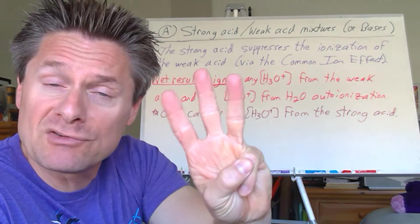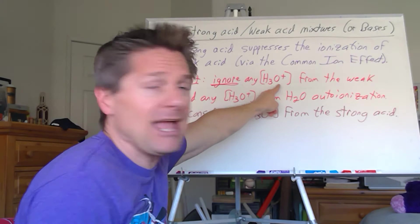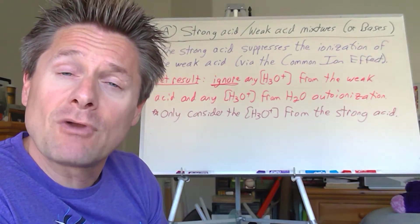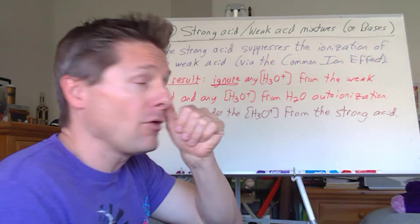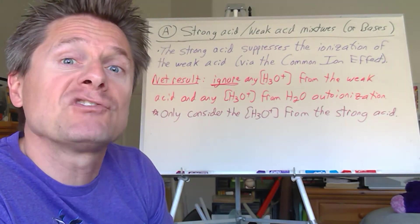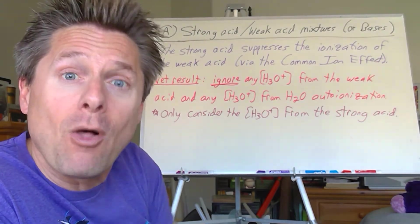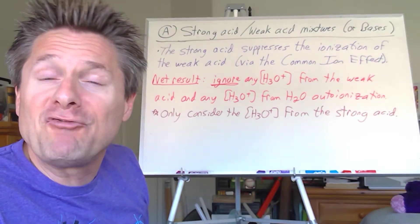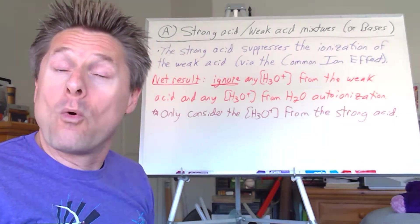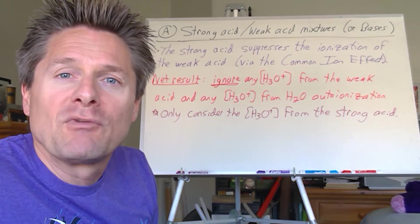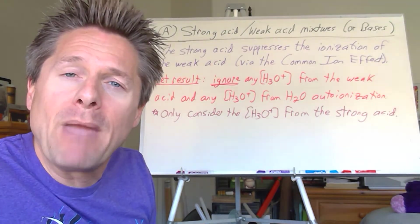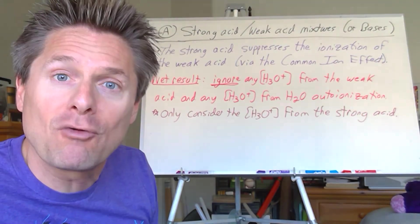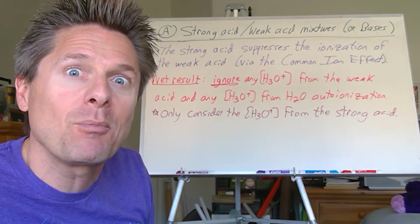So the net result is we have three sources of hydronium. We can ignore any hydronium from the weak acid because of the suppression of its ionization from the strong acid. We can ignore any H3O plus from water ionization, auto ionization. That was small already, and the strong acid suppresses that as well. That leaves only one source, the strong acid. So this becomes like a 15 second problem. But if you don't realize that on a test, you're going to waste 10, 15 minutes farting around with this thing, getting nowhere, going down a bad rabbit hole. Let me show you how easy this actually is.